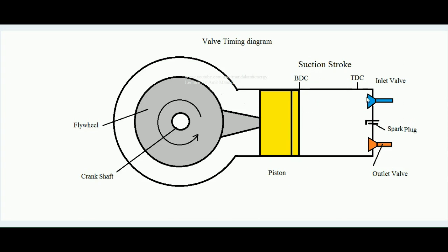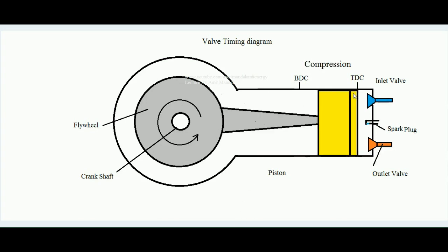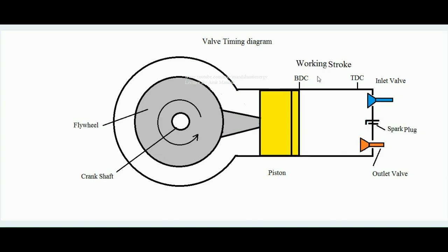So in the ideal case, the inlet valve must open exactly at the beginning of the suction stroke and must close exactly at the end of the suction stroke. When suction ends, the next stroke is the compression stroke. In the compression stroke, both valves are closed, and then the spark is introduced to the mixture. The next stroke is the working stroke, where the piston moves from TDC to BDC.